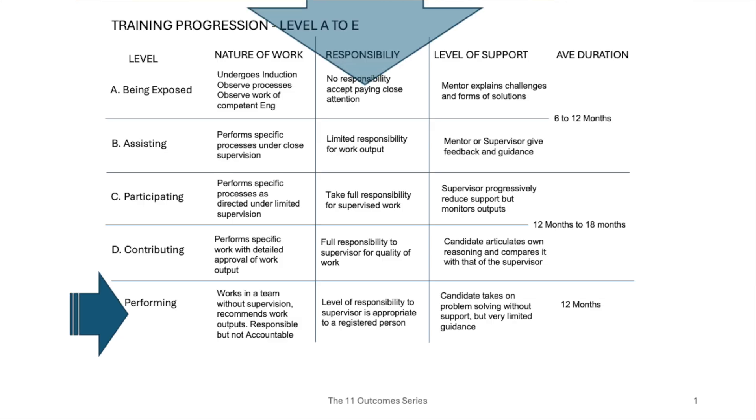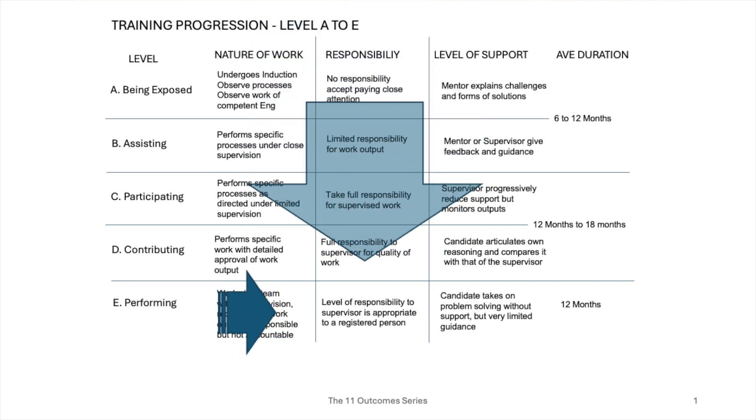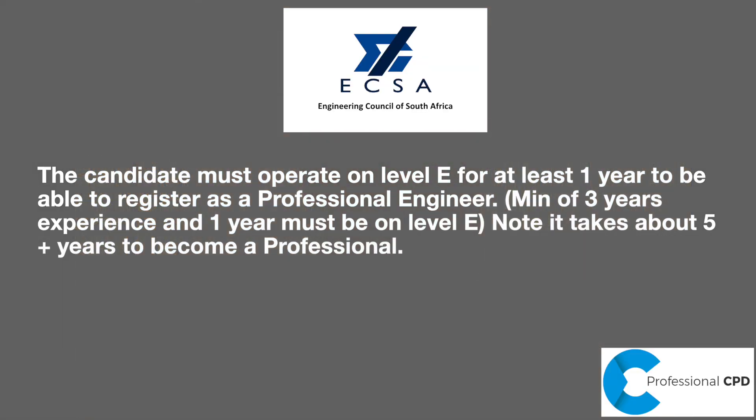There are five indicators of the degree of responsibility — from level A to level E. These levels need to be illustrated during your engineering report and your training and experience reports, which means you need to show how you move from level A right through to level E, because the interviewers and reviewers would like to see that natural progression. If you're not operating at level E for at least a minimum of one year, you will find it extremely difficult to register as a professional.